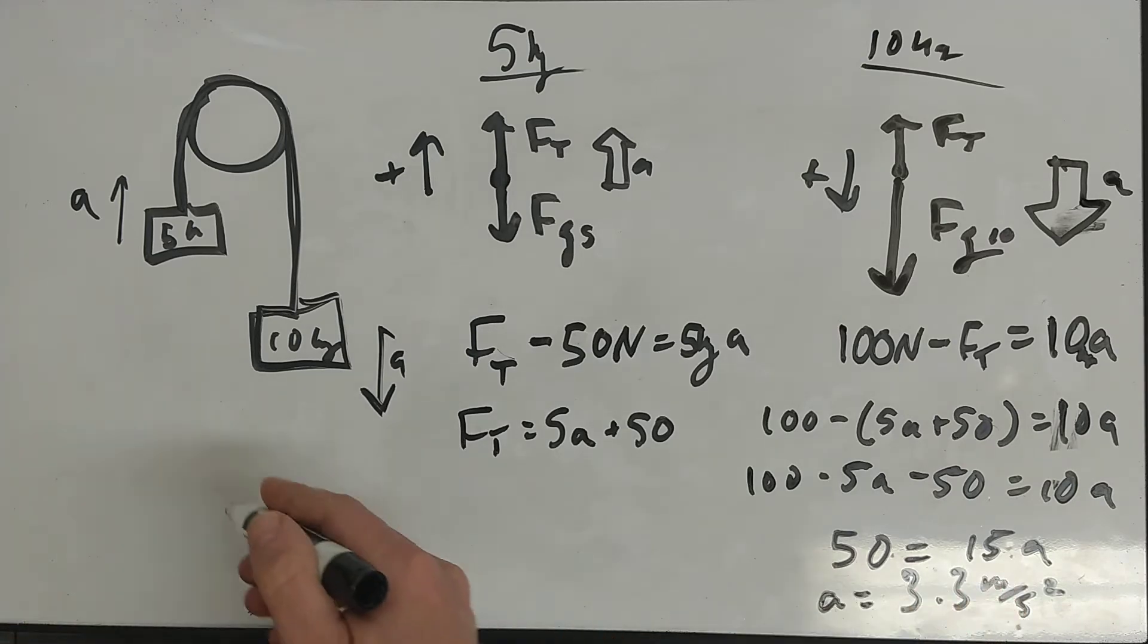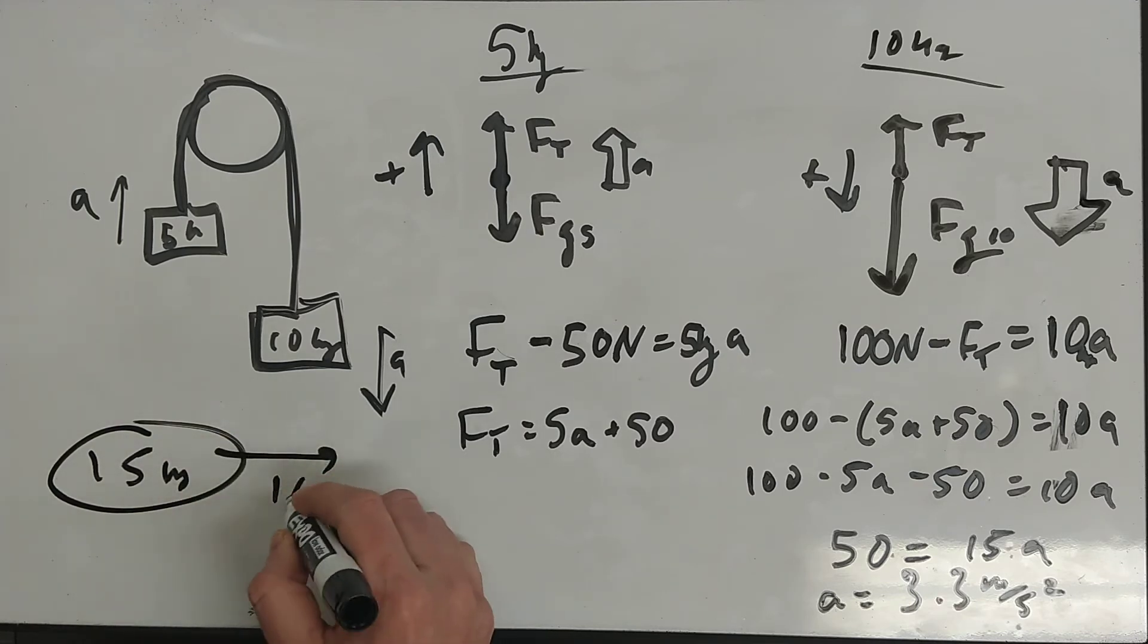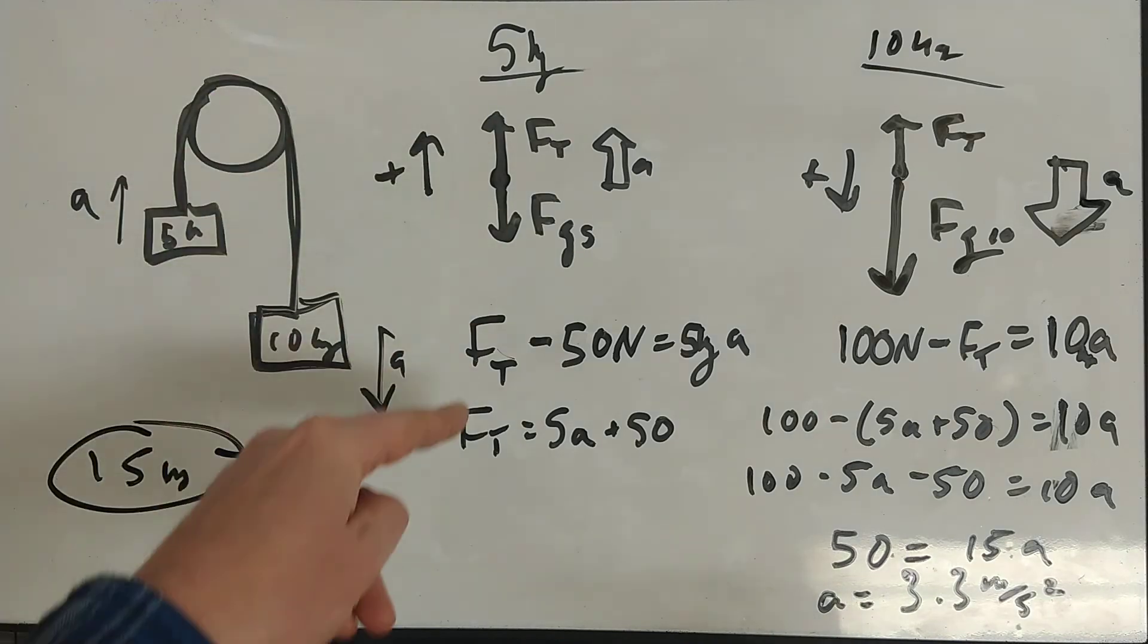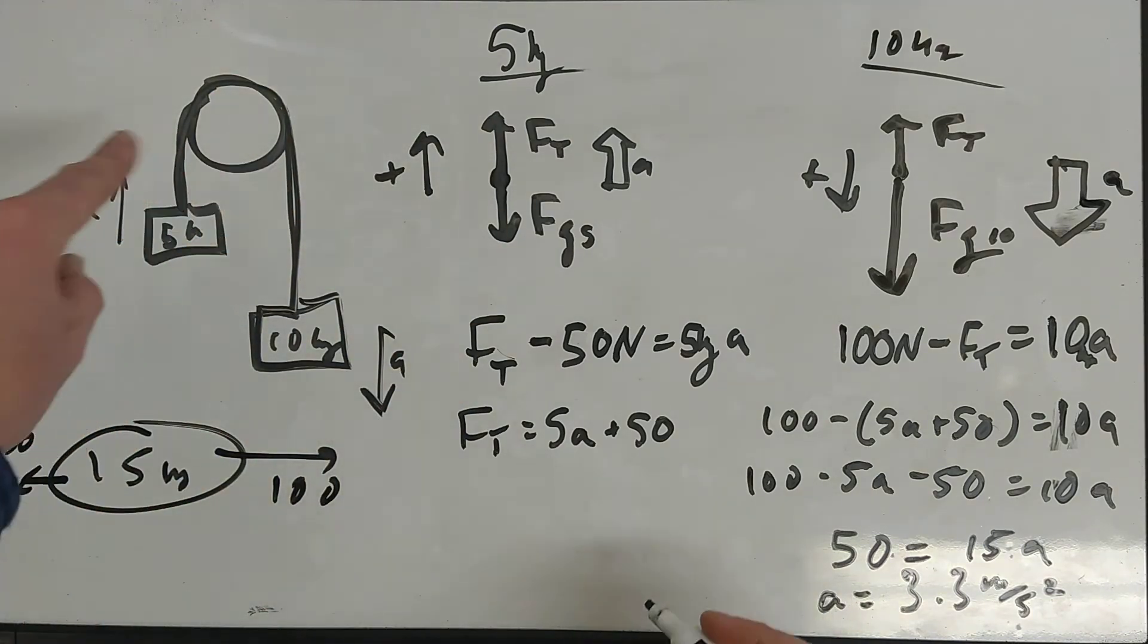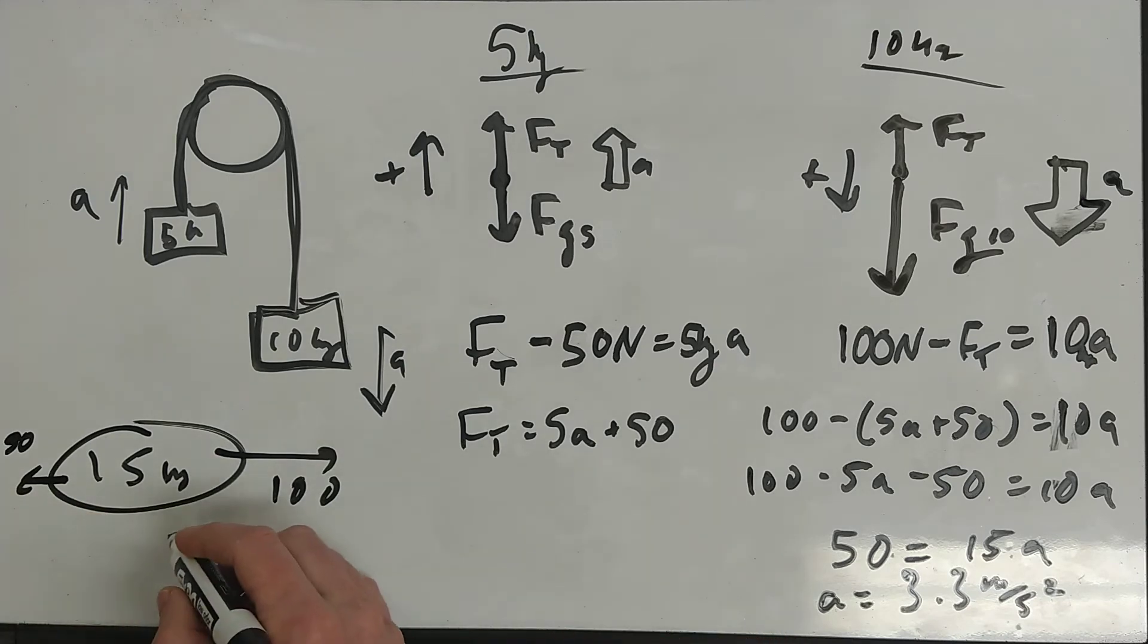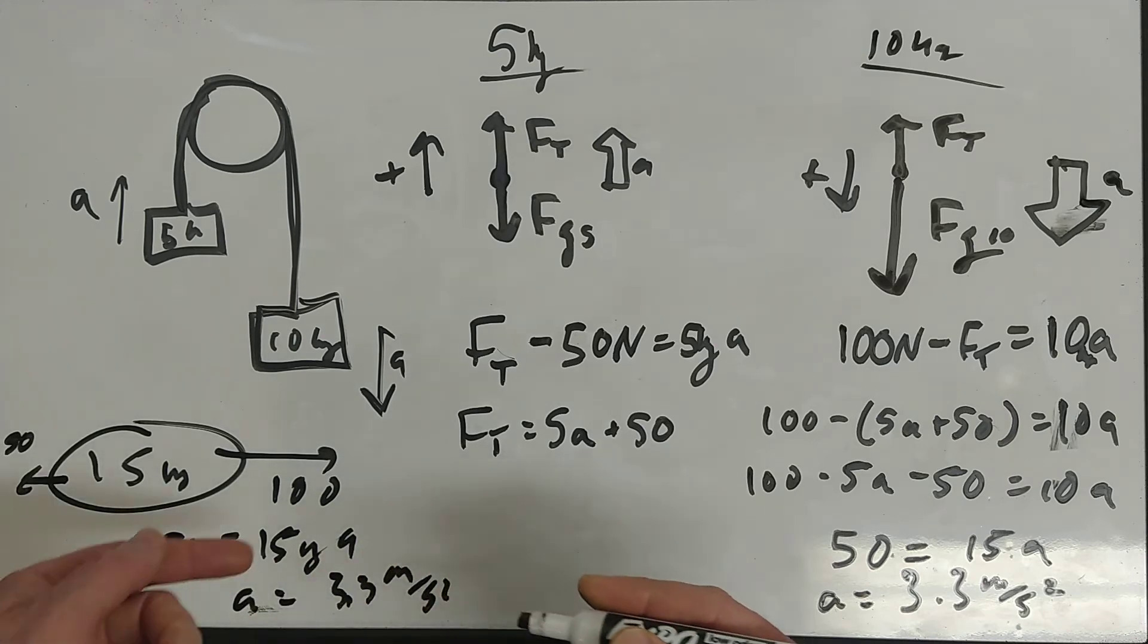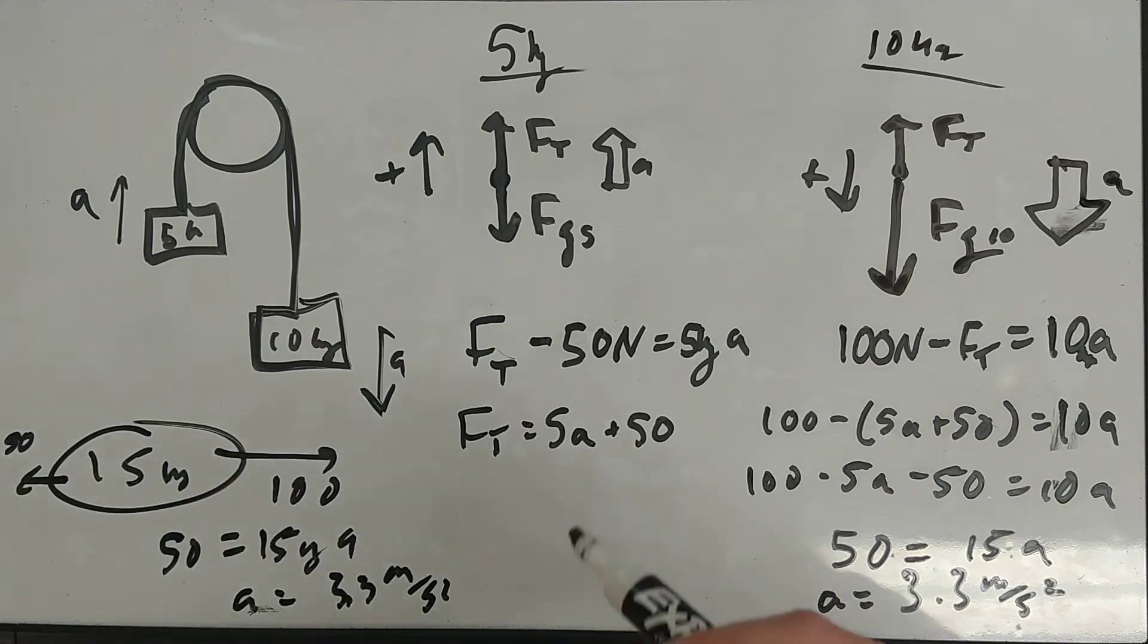3.3 meters per second. The blob method, what we did was we'd say, okay, the total mass of the system is 15 kilograms. We have 100 newtons trying to pull it basically what I would call clockwise. We have 50 newtons trying to pull it backwards counterclockwise. So that means F net is 50 equals 15 kilograms times A. A is 3.3 meters per second squared. And blob method is a great way to go to check your work. It's a great way to go for solving multiple choice questions. And you can solve short answer questions.